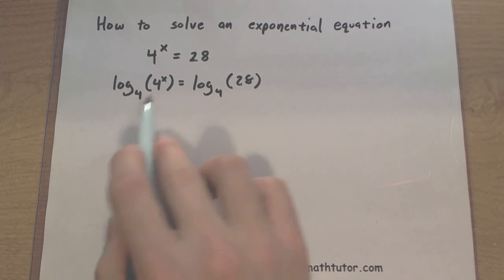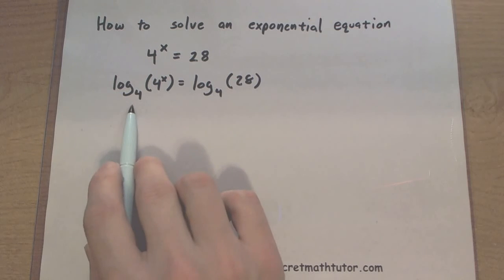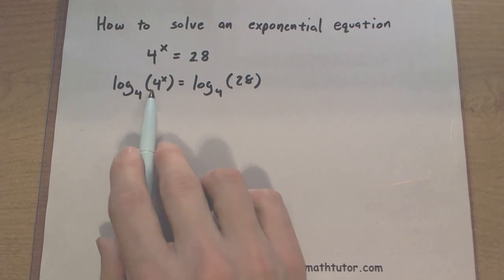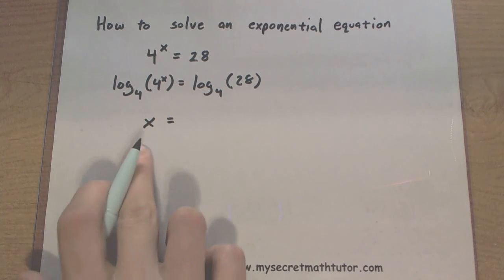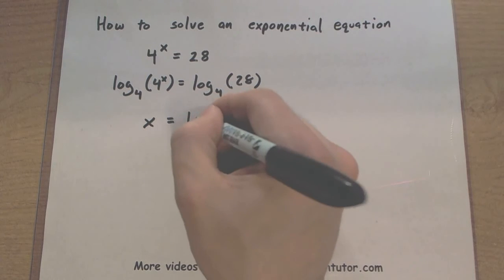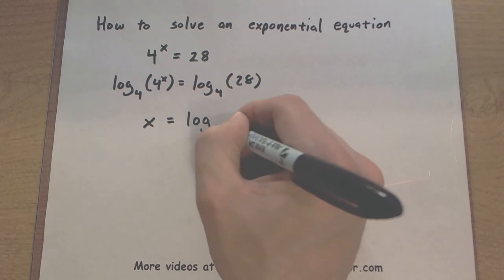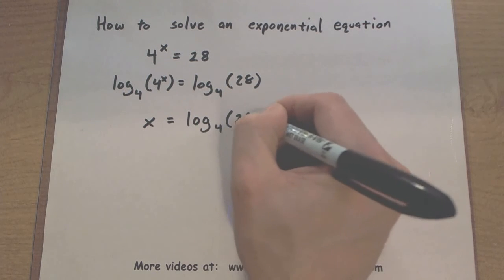Now what's that going to do on our left side? Well, this is log base 4, and here's our exponent, also with a base of 4. Well those things are basically going to get rid of each other, and we'll only be left with x. Now that's great, because that means I've gotten x all by itself.